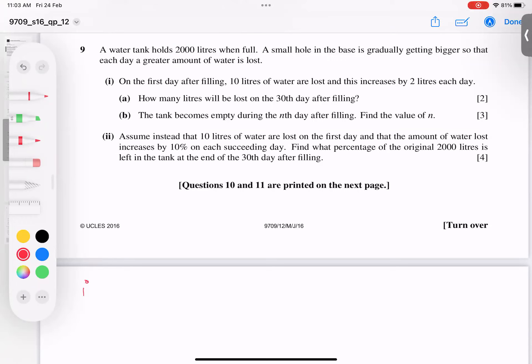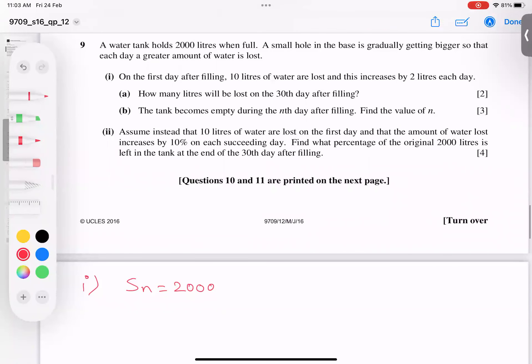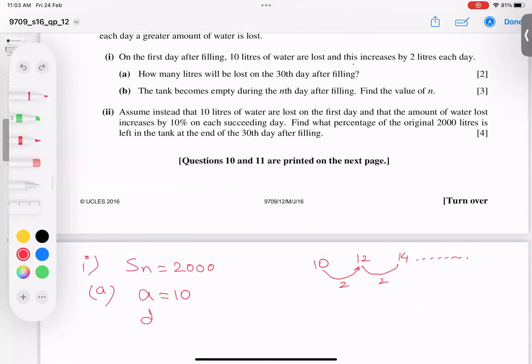I will count total water as Sn, not tn, because the problem mentions that on the first day 10 liters of water is lost. So this is a, and it increases by 2 liters each day. First day loss is 10, second day loss is 12 liters, then 14 liters, and so on. The question asks how many liters will be lost on the 30th day.